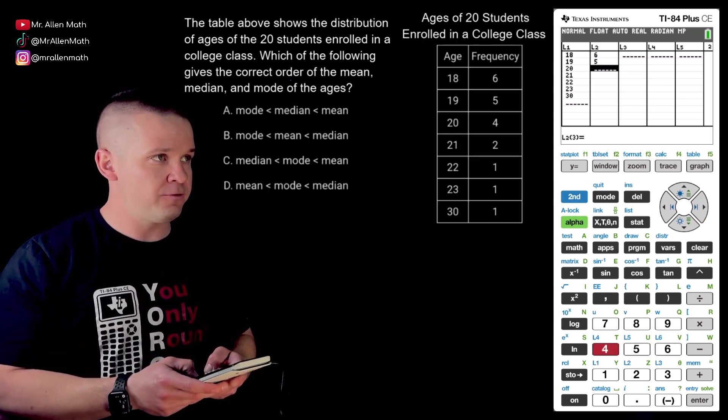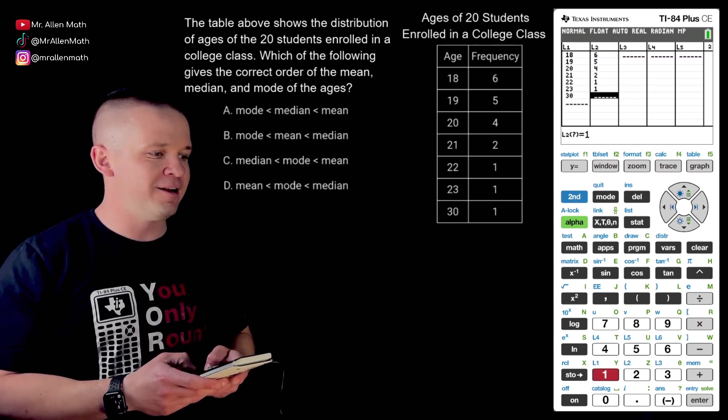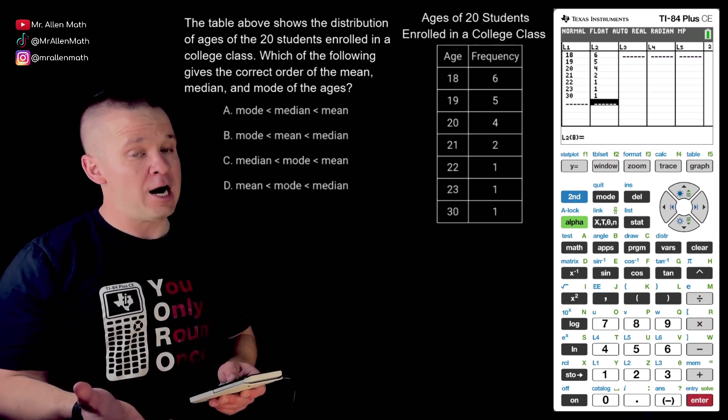So six enter, five enter, four enter, two enter, one enter, one enter, one enter. Boom. Okay, we got it all in there. Now what?